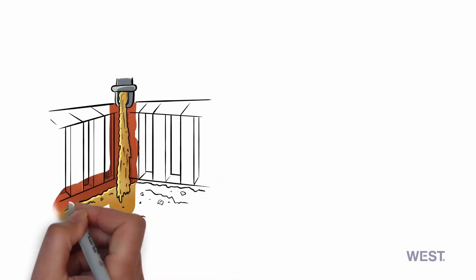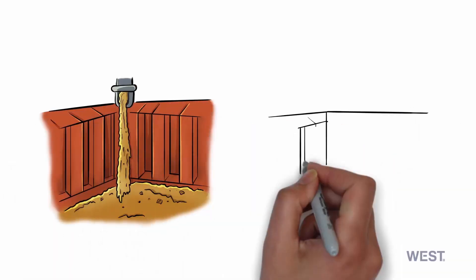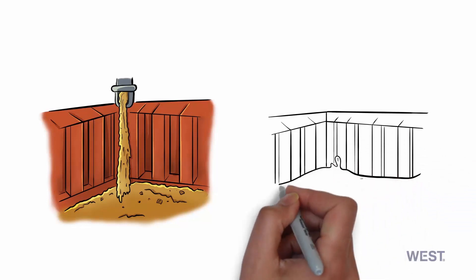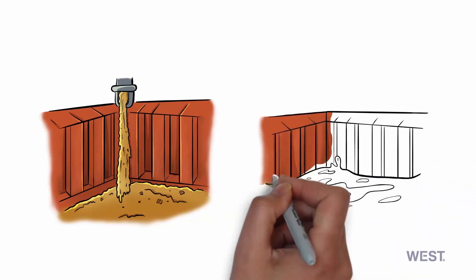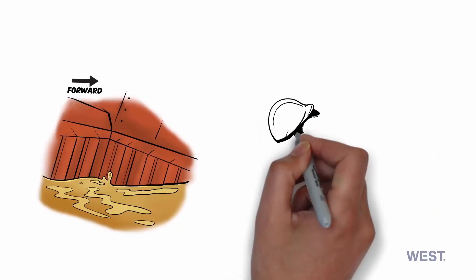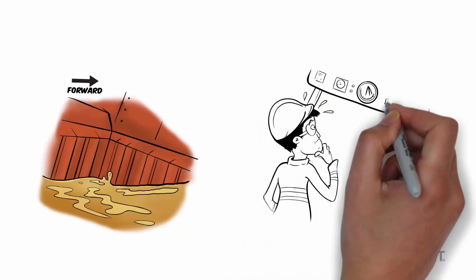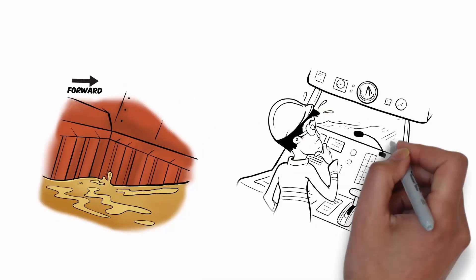Cargo can look dry when loaded but may contain sufficient moisture to become fluid or form a liquid slurry above solid material. In either case, this can seriously affect the ship's stability. In some cases it can happen very quickly with little warning and lead to a catastrophic loss of stability and rapid capsize.